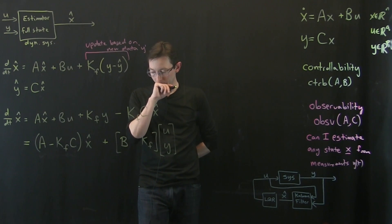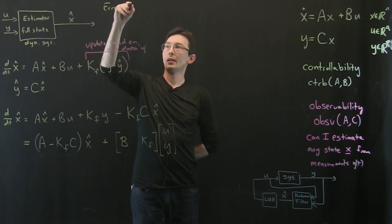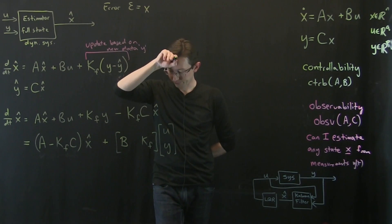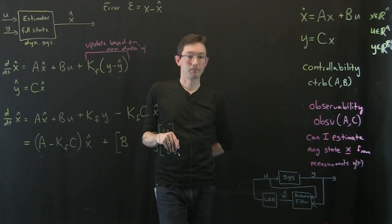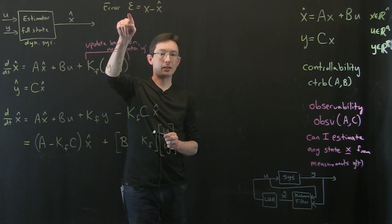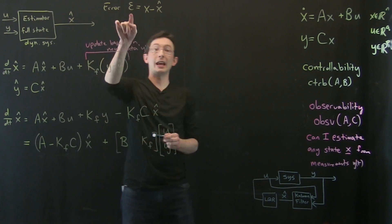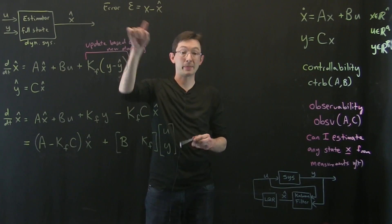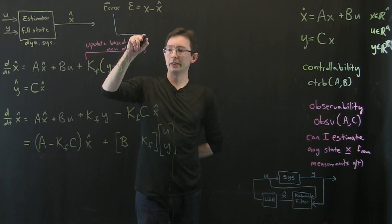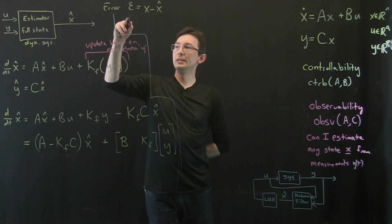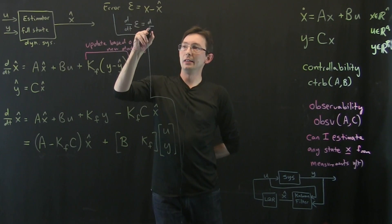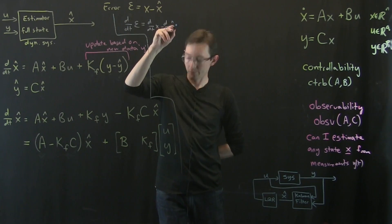So let's define an error. Epsilon equals my full state X minus X hat. Now what I'm going to do is I'm going to compute DDT of epsilon and I'm going to show that it has these dynamics. I want epsilon to go to zero. So if I choose these to have stable dynamics, epsilon goes to zero. This is a little bit involved. Let's go through it.